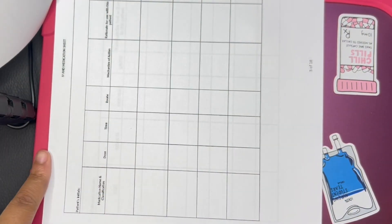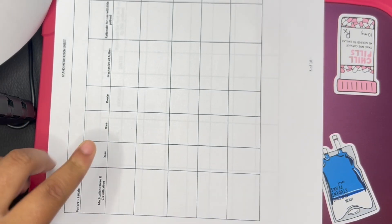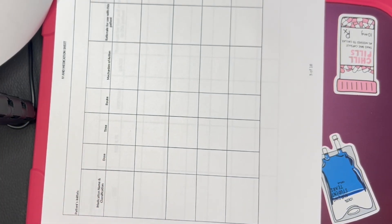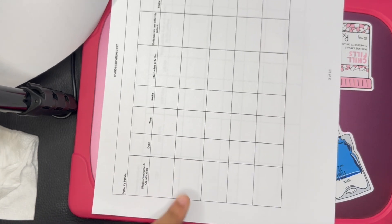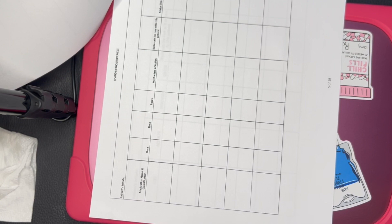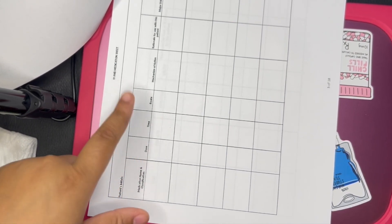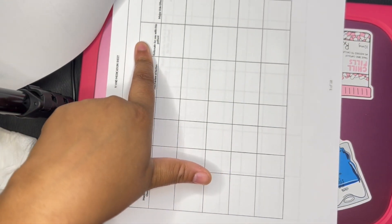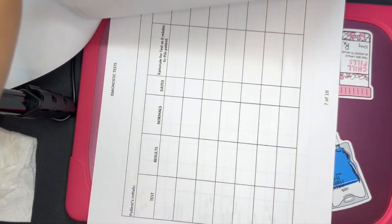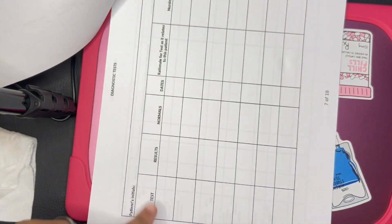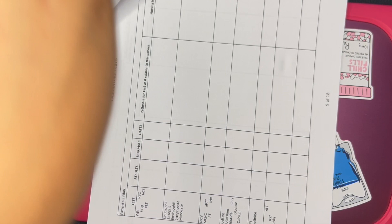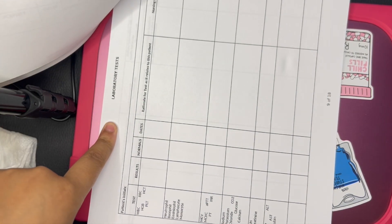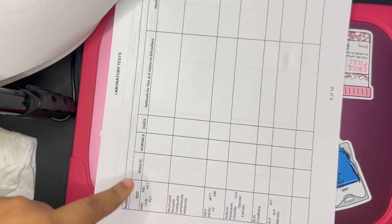Then this is the medication, the MAR medication sheet, which you will put the medication in the kind of classification here. You'll put the medication classification here, dose, time, route, MOA, rationale for why is that important for the patient to have it, and the major side effects.